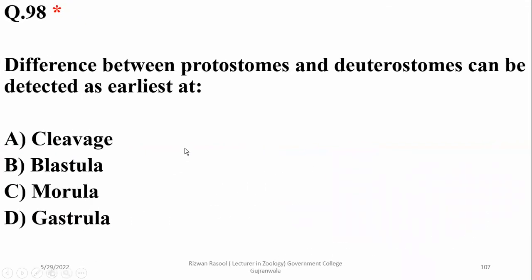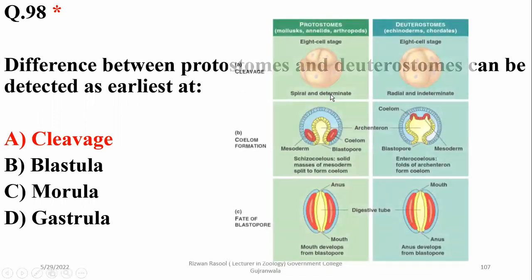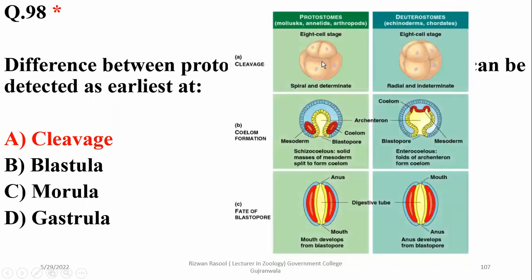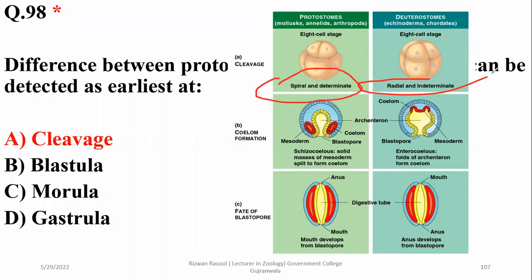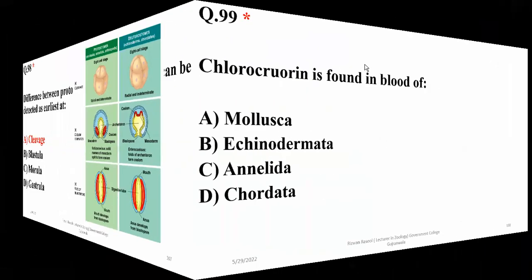Question 98: Difference between protostomes and deuterostomes can be detected as early as the stage of cleavage. This major difference is noted at cleavage because protostomes have spiral and indeterminate cleavage.